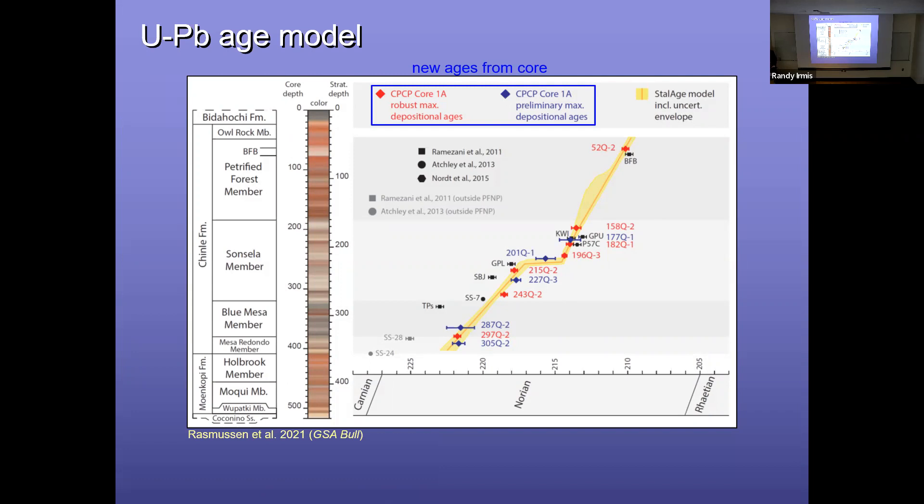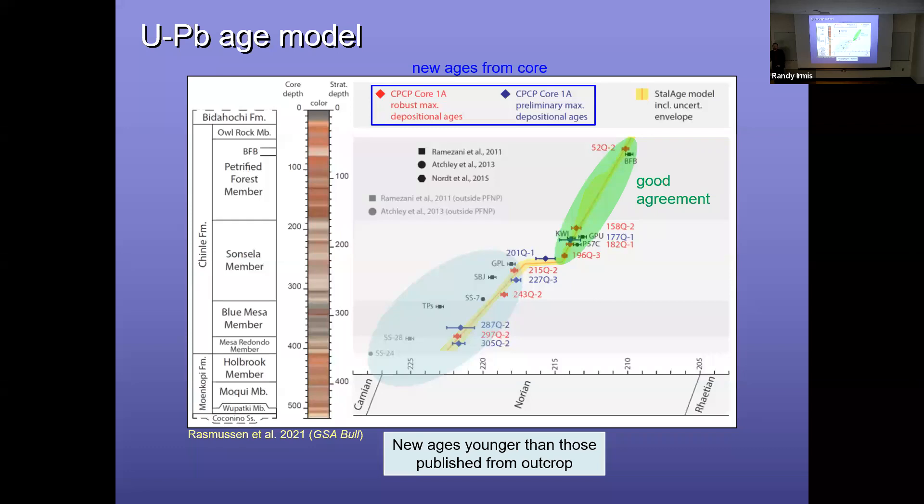The other thing that we observed was that although in the upper part of the core, we have very good agreement with previously published ages from outcrop, which are in black and gray. In the lower part of the core, there was a lot less agreement with our ages being younger. And we think that's probably because we were surveying hundreds of crystals from each sample using microbeam techniques first to identify the youngest age populations. Whereas those previous studies just dated a dozen or so crystals using TIMS that looked good. So they probably weren't finding the youngest crystals in their sample.